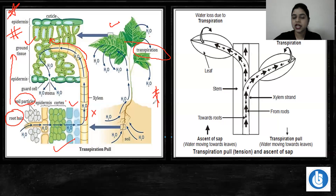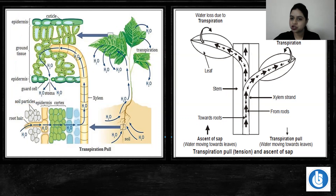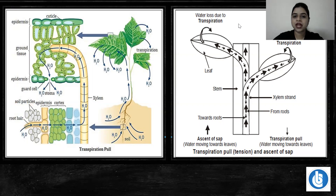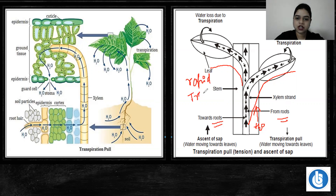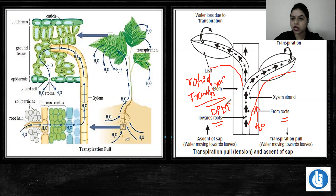It is a very easy concept. If you do not understand that diagram clearly, you can see the simpler diagram beside it. The same thing is shown more simply — the root at the bottom generates a continuous water column that moves through xylem to different parts. At the leaf, rapid transpiration is occurring. Because of high DPD, water loss happens, which in turn increases the water demand of the plant.